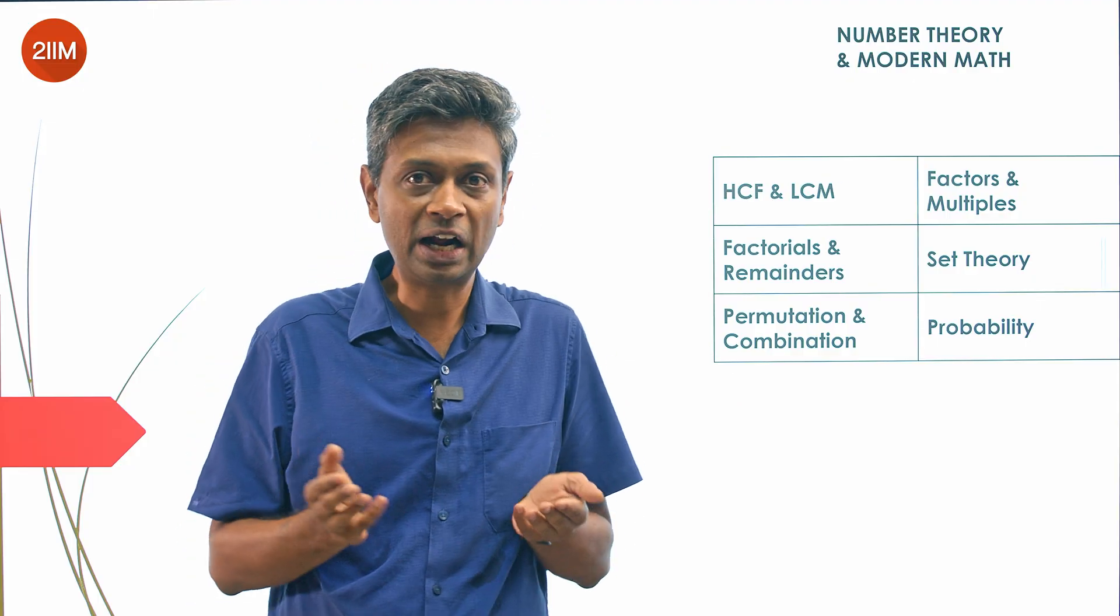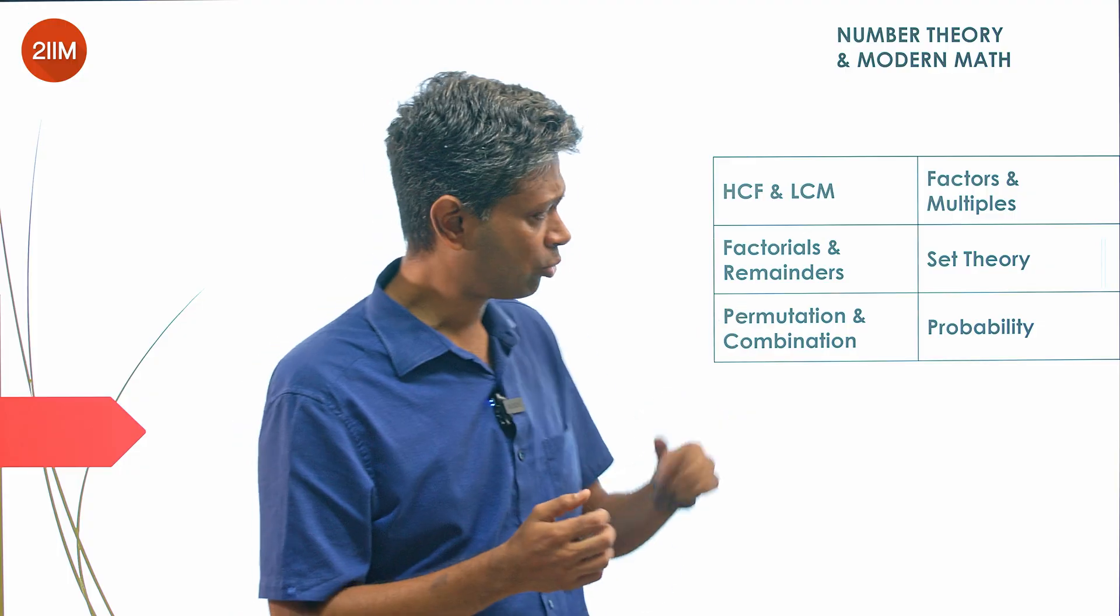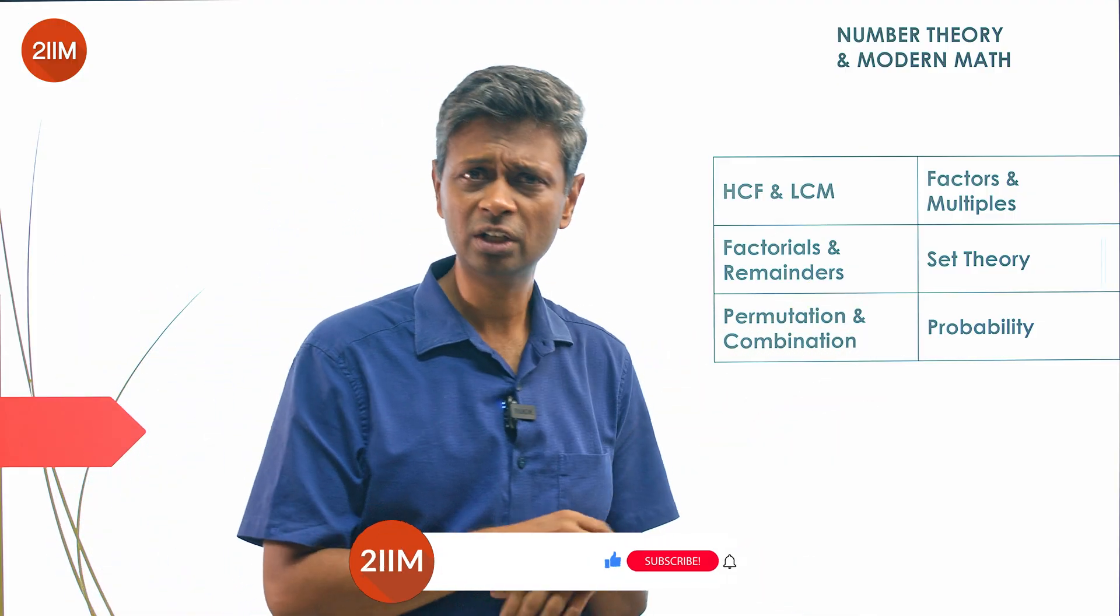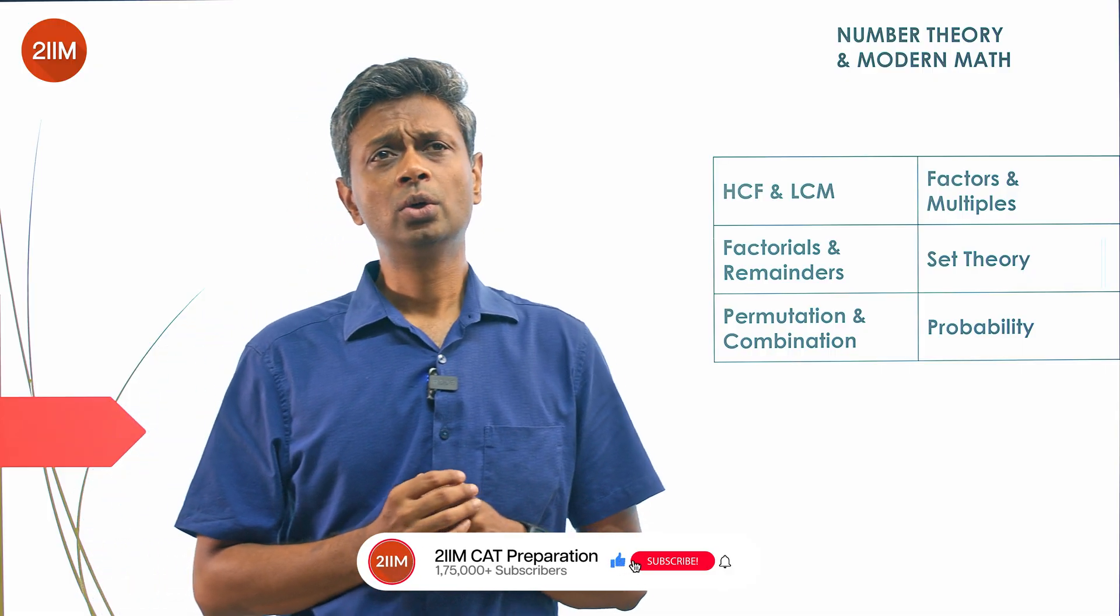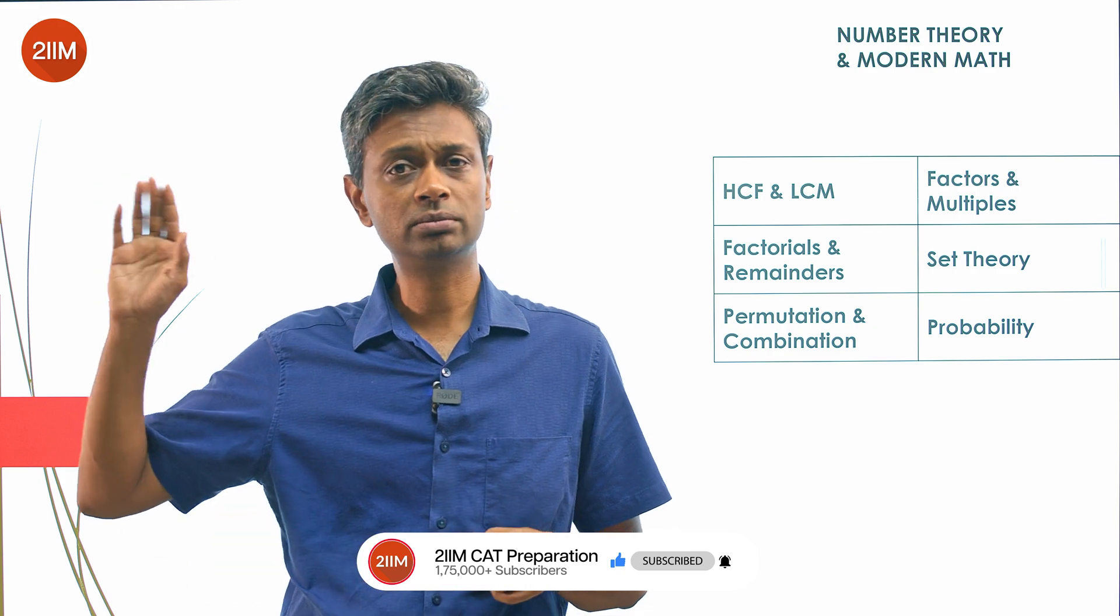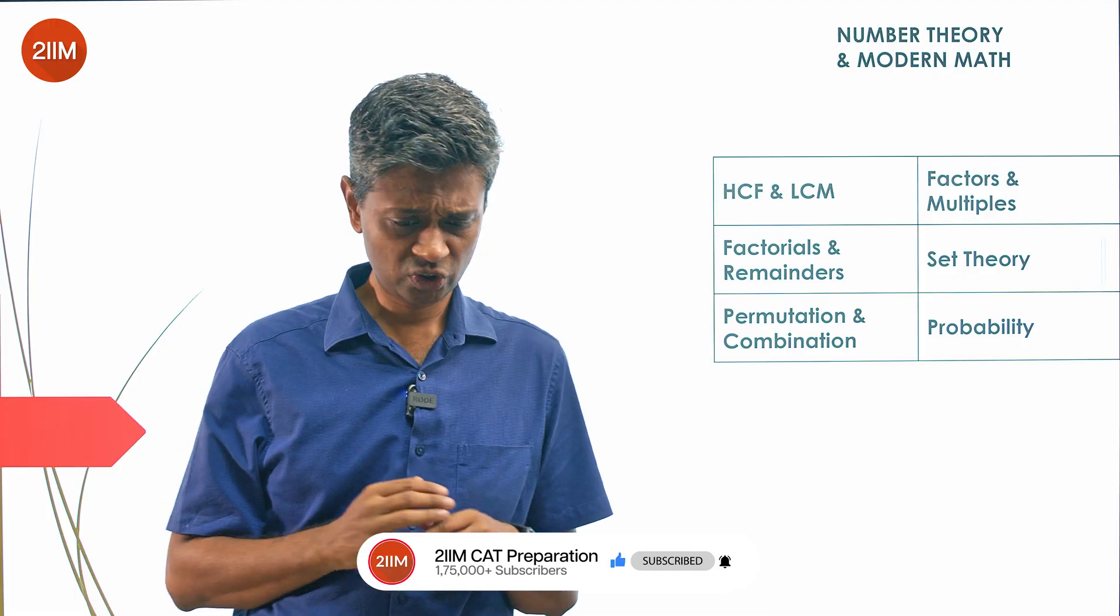Build the base so that the additional layers can be added on. Now permutation, combination, probability is a vast topic unto itself, and set theory. Do the basic framework here. Permutation and probability, you get one or two questions. Don't let it go if you're super ambitious, but don't go crazy and do n difficult questions.